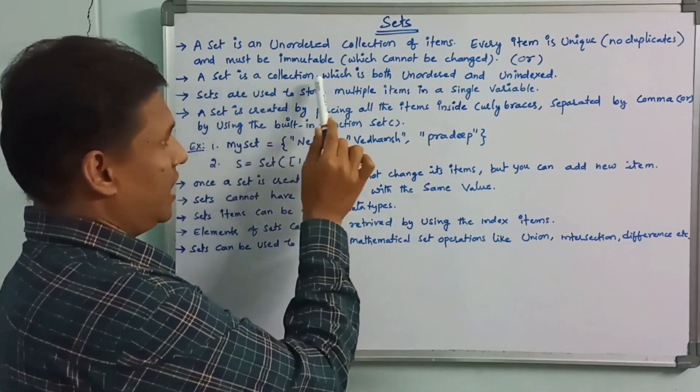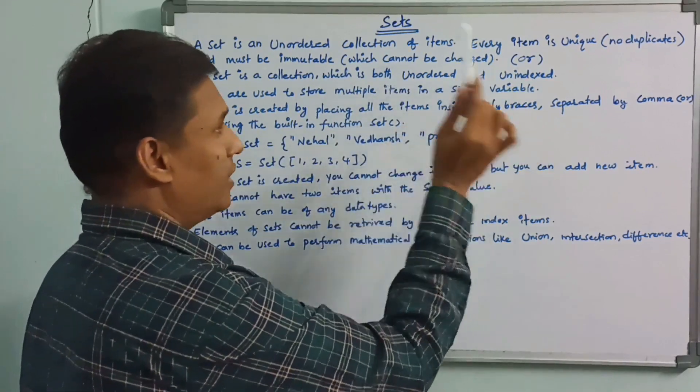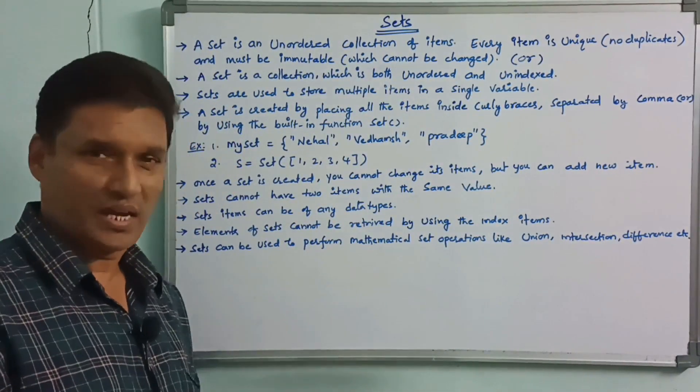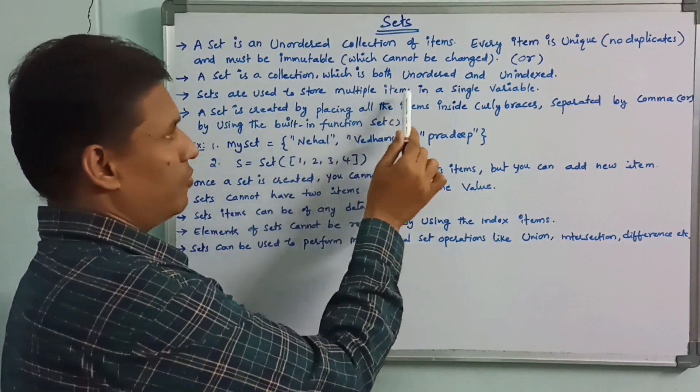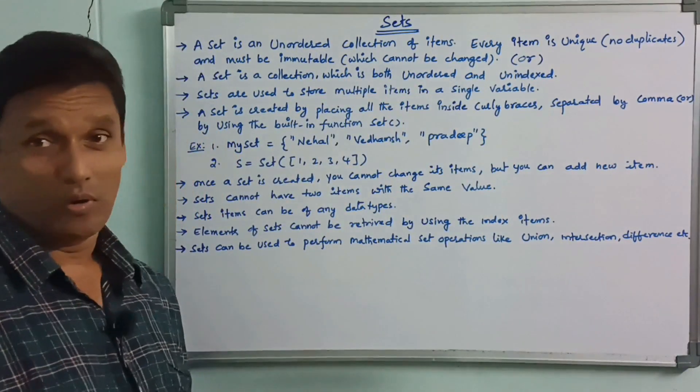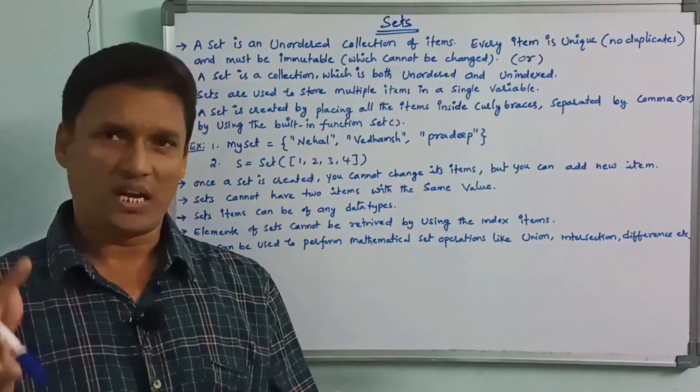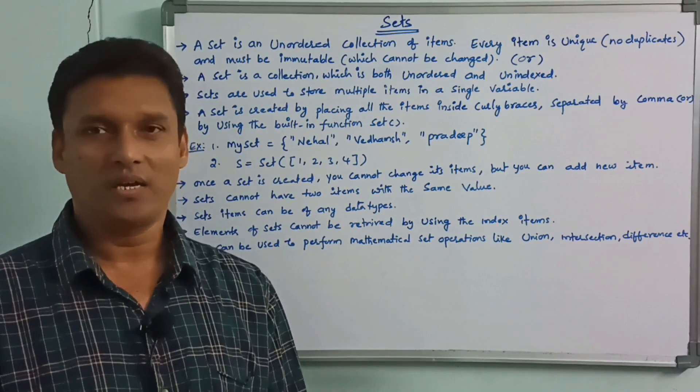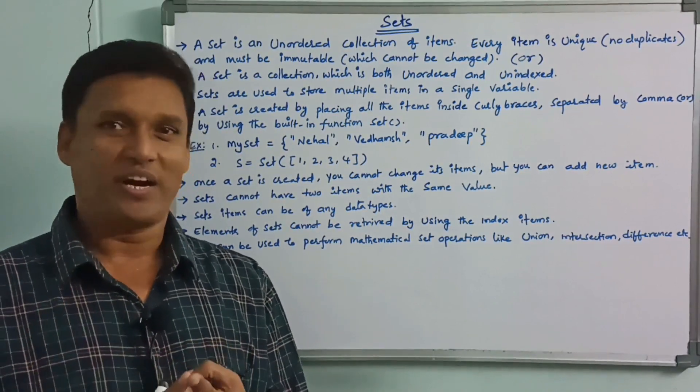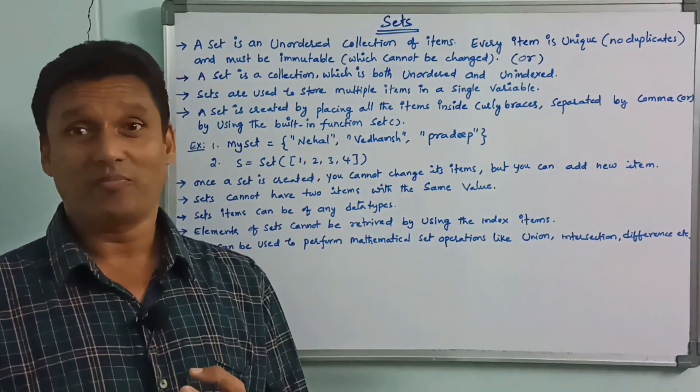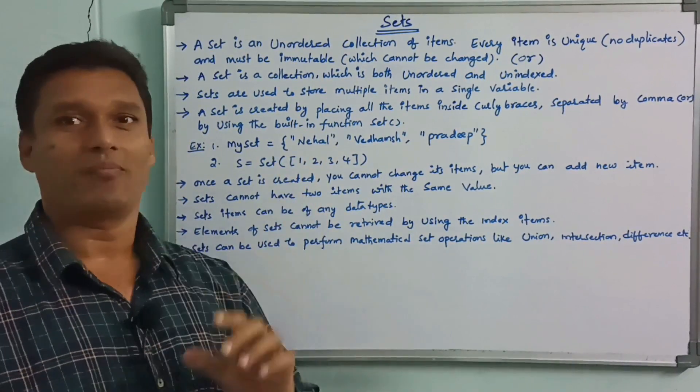Set is a collection which is both unordered and unindexed. Sets are used to store multiple items in a single variable. Python has a list data type, a tuple data type, and a set data type.